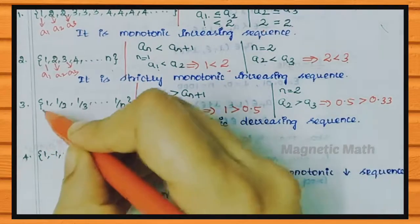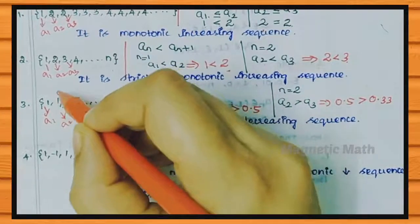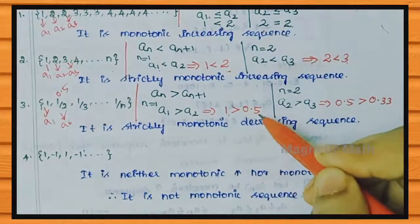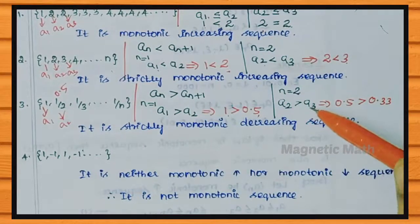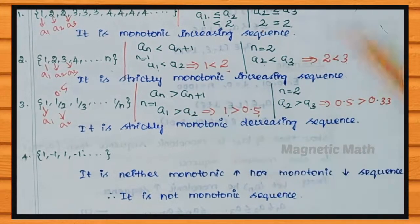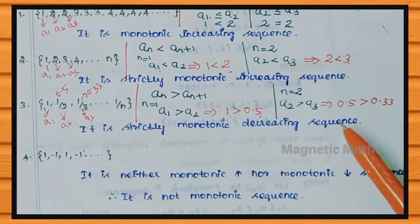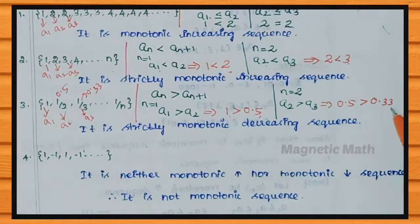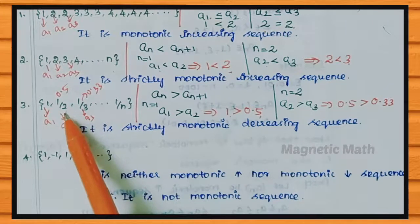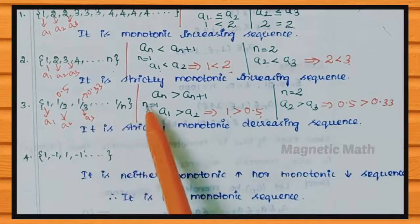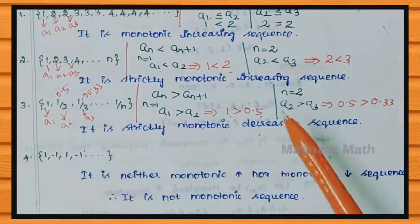Example 3: the sequence is 1, 1/2, 1/3, ..., 1/n. We will check if it is a decreasing sequence. For n=1: A1=1 and A2=1/2=0.5, so 1 > 0.5, satisfied. For n=2: A2=0.5 and A3=1/3≈0.33, so 0.5 > 0.33, satisfied. Since every term is strictly greater than the next, this is a Strictly Decreasing Sequence.